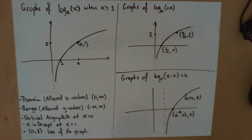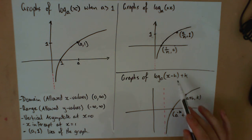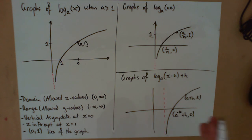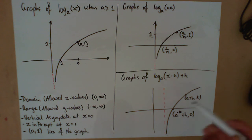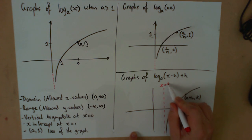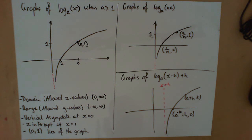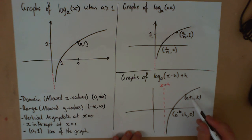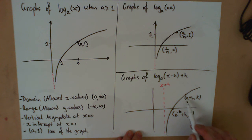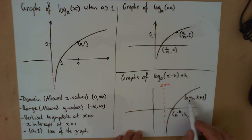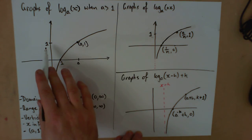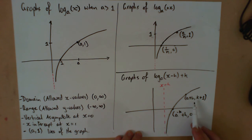For graphs of log to the base a of (x minus h) plus k, it works exactly the same as all our other functions. The h moves it left and right — a negative value moves it to the right, a positive value moves it to the left — and k is our vertical translation, moving it up and down. Putting those together, we have a vertical asymptote at x equals h, and the point that was at (a, 1) is now at (a plus h, k plus 1), because we've moved across by h and up by k.